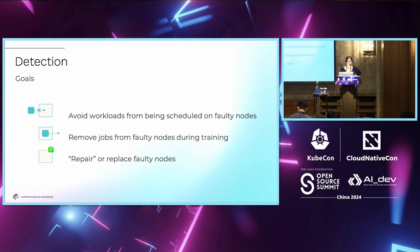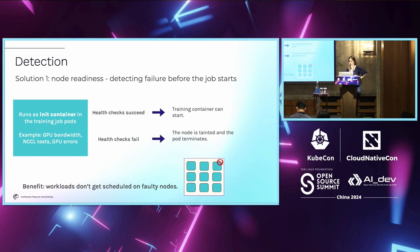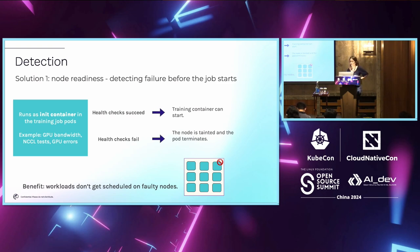Resolution starts with detection. The different goals of detection are: (a) avoid workloads being scheduled on faulty nodes, (b) remove pods from faulty nodes during training and reschedule them on healthy nodes, and (c) repair or replace the faulty nodes. The first solution is node readiness — detecting failures before the job starts using an init container that runs health checks such as GPU bandwidth tests, NCCL tests, and GPU rows tests. These run ahead of the training job. If health checks succeed, you move on to the training job container. If they fail, the node is tainted and the pod terminates and gets rescheduled.